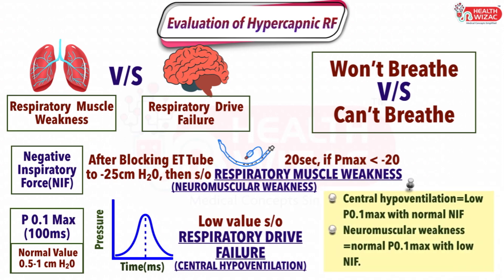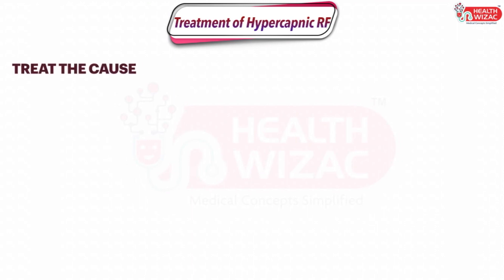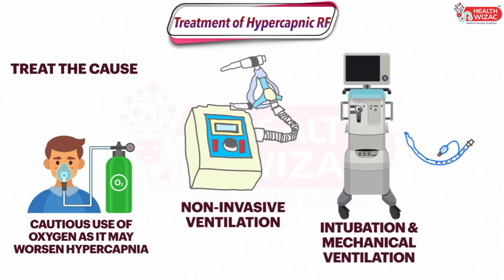To summarize: central hypoventilation presents with low P0.1 Max with normal Negative Inspiratory Force, whereas neuromuscular weakness presents with normal P0.1 Max with low Negative Inspiratory Force. These tests help find the cause of hypercapnia and predict patient outcome. Treatment includes treating the underlying cause, with oxygen therapy used very cautiously as it may worsen hypercapnia. NIV trials should be attempted in selected patients, and if the patient fails to respond, intubation and invasive mechanical ventilation should be considered.